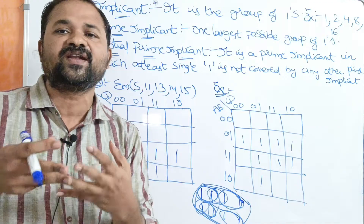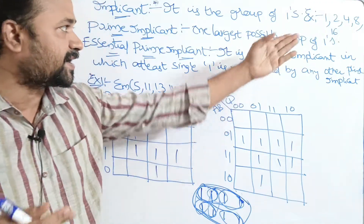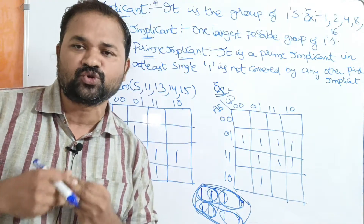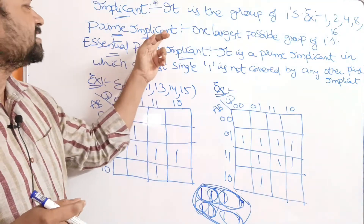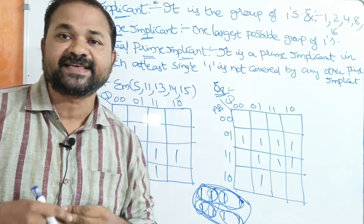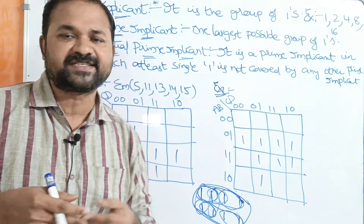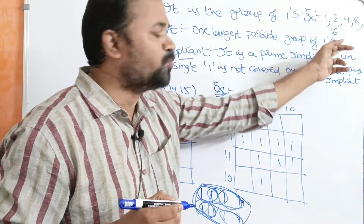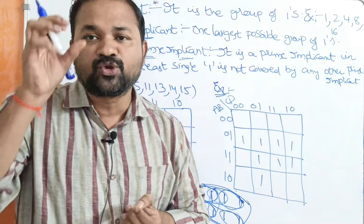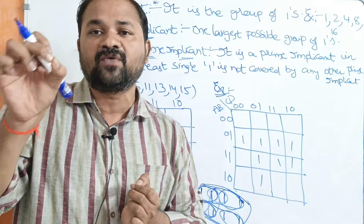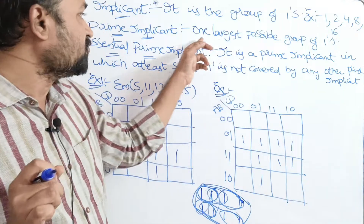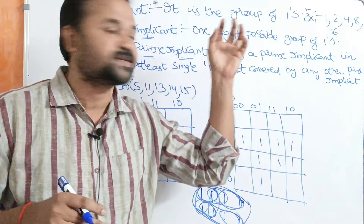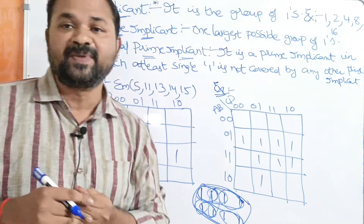So Implicant means it is the group of ones, and the group should be in the powers of two — one, two, four, eight, or sixteen ones. Implicants are mainly classified into two types: Prime Implicant and Essential Prime Implicant. The Prime Implicant is the largest possible group of ones used to cover a one. That is called a Prime Implicant.